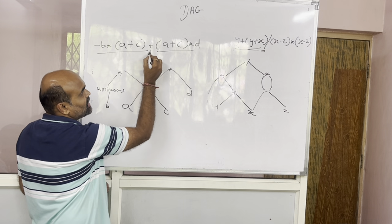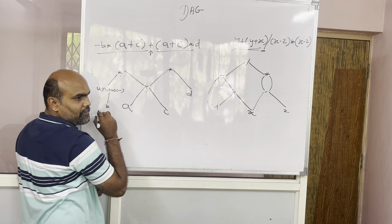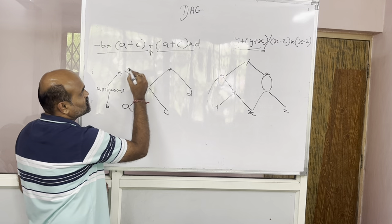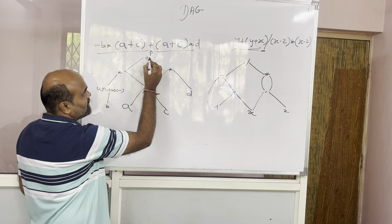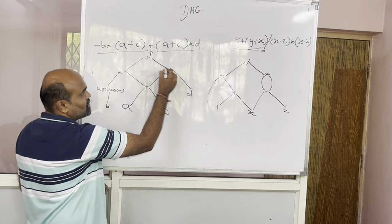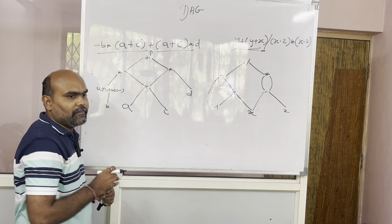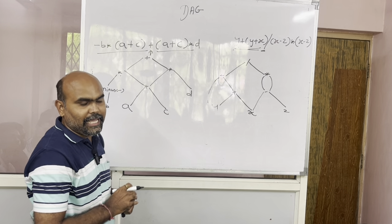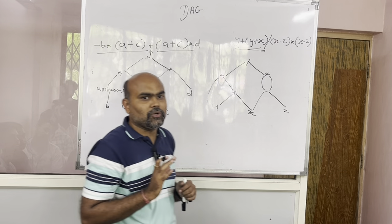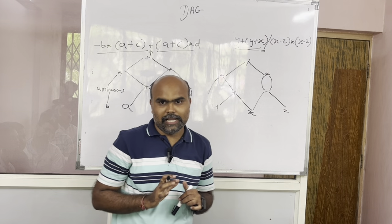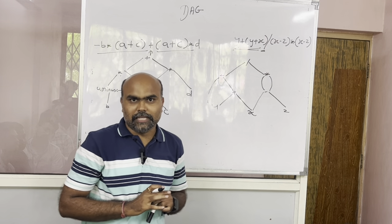Yeh dono ke beech mein yeh wala expression yaha pe haemara khatam ho gaya. Yaha pe plus c ho gaya, so haem yaha pe plus draw karenge. Toh yeh ho gaya aapka plus — like this, you have to solve the DAG. Thank you.